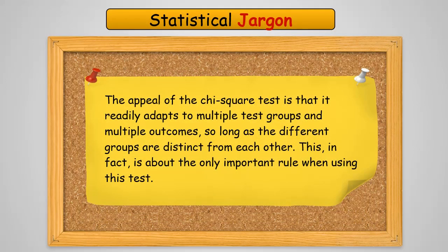One of the appeals of the chi-square test is that it easily adapts to multiple groups and multiple outcomes. It's scalable. As long as the different groups are distinct from one another, it's going to continue to work just fine. This is, in fact, the only important rule when using this test.